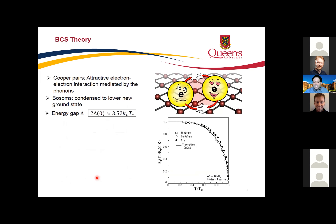Later, Bardeen, Cooper, and Schrieffer explained why superconductivity occurs. They found that changes in the lattice of positive charges produce phonons — collective excitations of the lattice — which interact with electrons and bind them together as Cooper pairs. The binding energy is different from what we find at the Fermi level in normal conductors, and it is related to the critical temperature by the BCS equations.